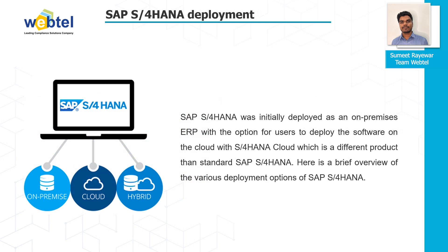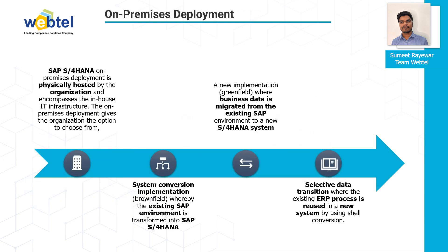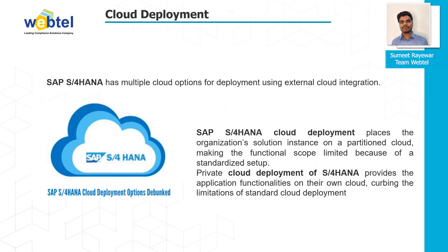Deployment of SAP S4 HANA: SAP S4 HANA was initially deployed as an on-premises ERP with the option for users to deploy the software on the cloud via S4 HANA Cloud, which is a different product than standard SAP S4 HANA. On-premises deployment means SAP S4 HANA is physically hosted by the organization and encompasses the in-house IT infrastructure. A greenfield implementation involves migrating business data from an existing SAP environment to a new S4 HANA system.